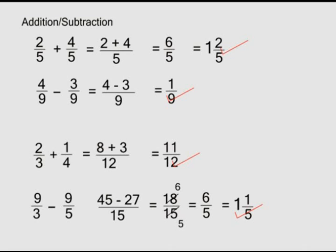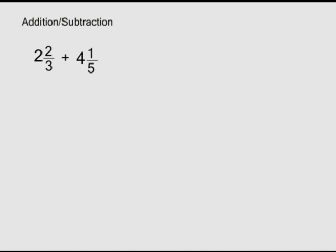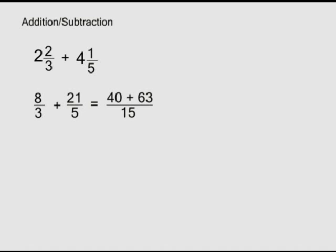When working with mixed fractions, it's safer to first convert them into improper fractions. Two and two over three plus four and one over five: convert them first. Two and two over three equals eight over three; four and one over five equals twenty-one over five. LCM of three and five is fifteen. Fifteen divided by three is five; times eight is forty. Plus fifteen divided by five is three; times twenty-one is sixty-three. Forty plus sixty-three is one hundred and three over fifteen, which as a mixed fraction is six and thirteen over fifteen.